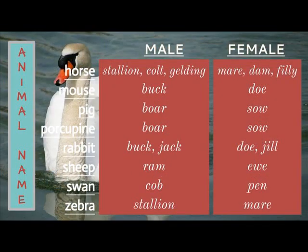A male horse is a stallion, or a colt if young, or a gelding if castrated. A female horse is a mare, a dam, or a filly if young.